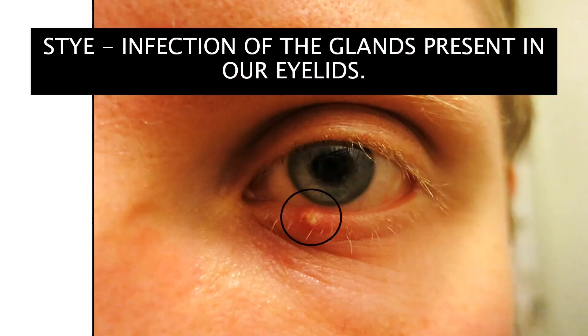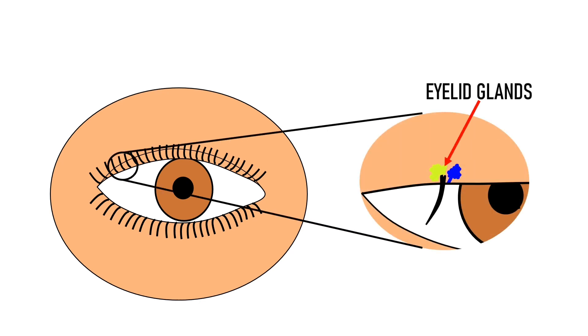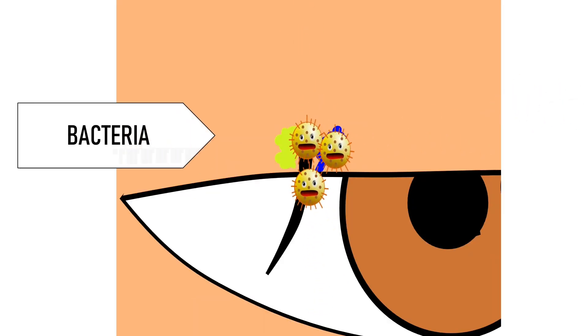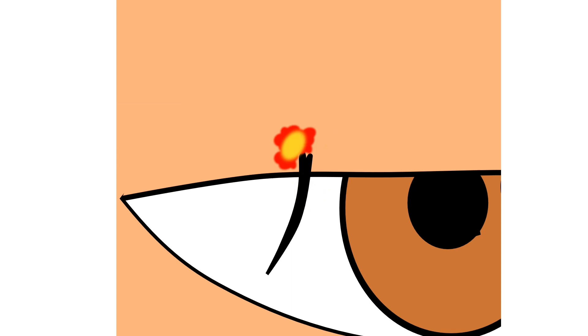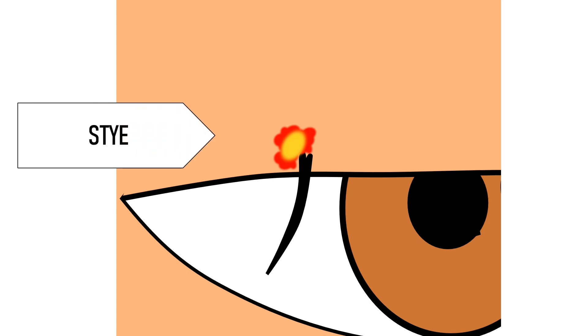A stye is an infection of the glands that are present in our eyelids. Our eyelids contain hundreds of eyelashes, and these eyelashes have certain glands at their hair follicles. These glands produce oil that keeps our eyelashes and eyes moisturized. However, sometimes bacteria can reach these glands, infect them, and this leads to the formation of a nodule filled with pus, which we call a stye.